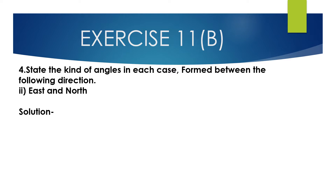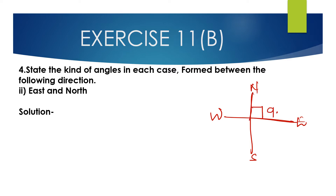Question number 4, second bit: State the kind of angles formed between the following directions — east and north. The angle formed between east and north is 90 degrees. So this is a right angle. The angle formed between the direction east and north is a right angle.